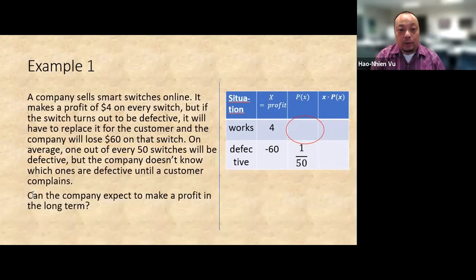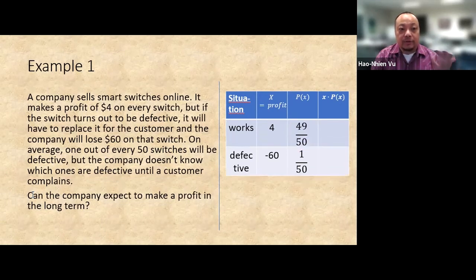Now there's just one more probability to go. Since the total probability has to be one, we know what has to go in there. One out of fifty are defective, so forty-nine out of fifty are good. Great, we're done setting up the table.